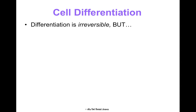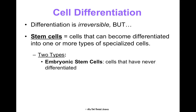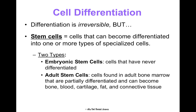Cell differentiation is irreversible. Once you become a heart cell, you are a heart cell forever. But some cells are stem cells — cells that have not been differentiated yet. They're undifferentiated, so they still can become one or more types of specialized cells. There are two types. Embryonic stem cells are what all cells start as — never before differentiated. Adult stem cells are found in adult bone marrow, but they've been partially differentiated, so we can only make them into bone, blood, cartilage, fat, or connective tissue.